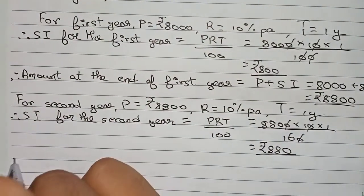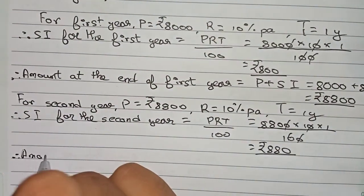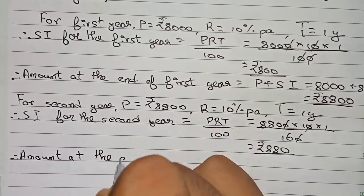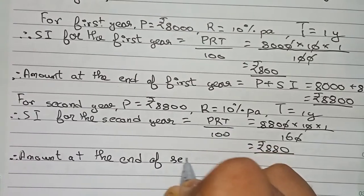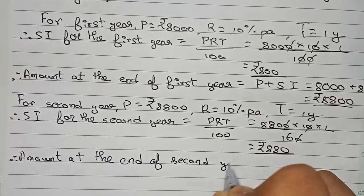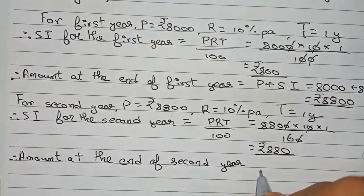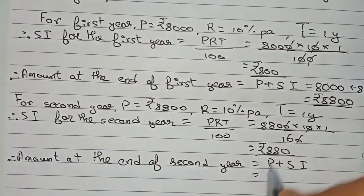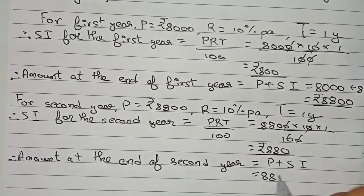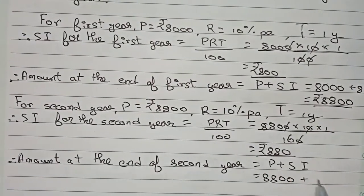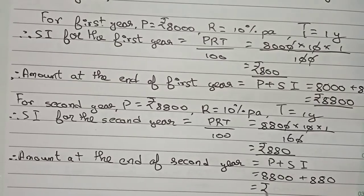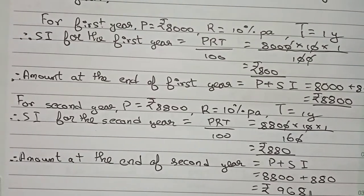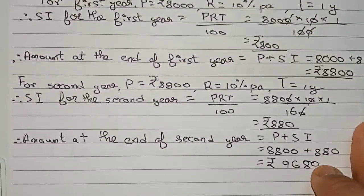Now the amount at the end of the second year: using the formula Principal + SI, that is 8800 + 880, which equals rupees 9680. This is the amount at the end of the second year.